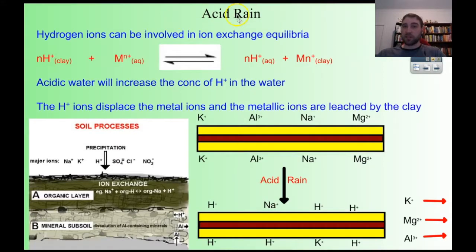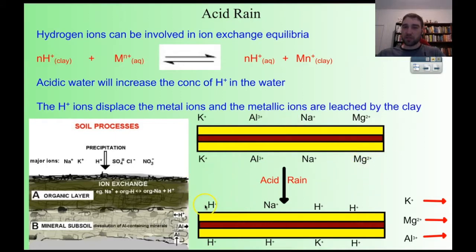If we add acid rain, we're increasing the concentration of hydrogen ions in the soil water. Those hydrogen ions can displace the metal ions stuck onto the clay, so hydrogen ions end up stuck to the clay instead of the metal ions. You can see the clay with its negative surface charge and positive ions — acid rain brings hydrogen ions that replace those metal cations, and those cations go into the soil water. This is called leaching.